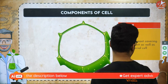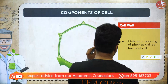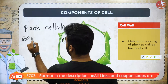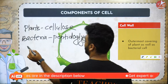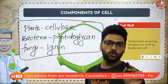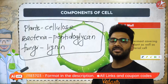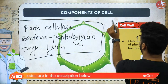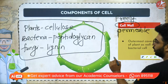Now let's talk about the cell wall. Cell wall is present in plants as well as bacteria. In plants it is made up of cellulose, in bacteria it is made up of peptidoglycan, and in fungi it is made up of lignin. The cell wall is freely permeable — it allows everything to go in and out of the cell.